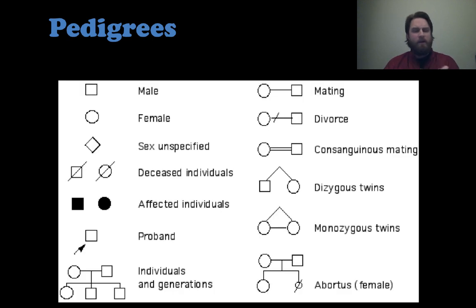So as we conclude here, I just want you guys to see that you see the male and female square and circle. But there are a lot of other symbols that I want you to know. So you could have a diamond when the sex is unspecified of the child. So if we know somebody had a child, but we didn't know if it was male or female, you could use a diamond.